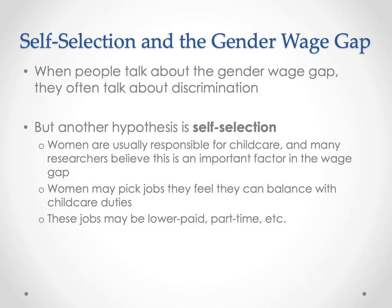Selection into occupation, or occupational sorting, can explain some of the gender wage gap. In summary, all of these things provide some explanation: differences in human capital are important for explaining wages, occupational sorting is important, and discrimination is important — all three need to be considered. Occupational sorting or self-selection into occupation can also be thought of as a form of discrimination, because different groups of people have different incentives to pick different kinds of jobs based upon non-labor market conditions.